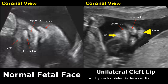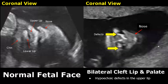Cleft lip and palate is a common facial abnormality in neonates. These clefts can be unilateral or bilateral. In this image, we have a unilateral cleft lip — there is a hypoechoic defect in the upper lip. In bilateral cleft lip and palate, two hypoechoic defects can be seen in the upper lip.